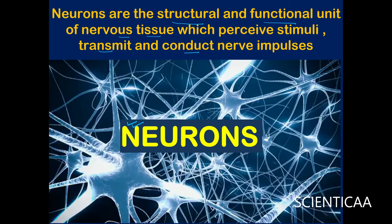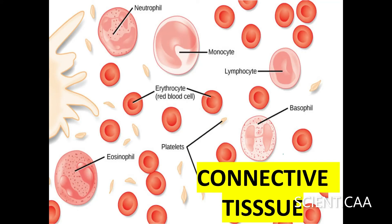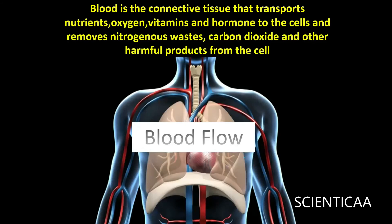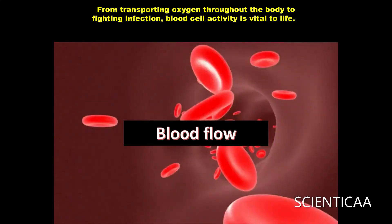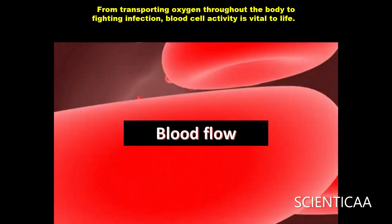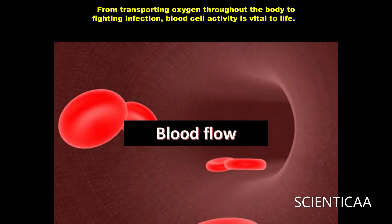Another type of tissue in the human body is connective tissue. Connective tissue provides support, binds together, and protects the tissues and organs of the body. It is further divided into loose and dense connective tissues. Blood is an example of connective tissue — it transports nutrients, oxygen, vitamins, and hormones to the cells, and removes nitrogenous wastes, carbon dioxide, and other harmful products. Blood plays an important role from transporting oxygen throughout the body to fighting infections.